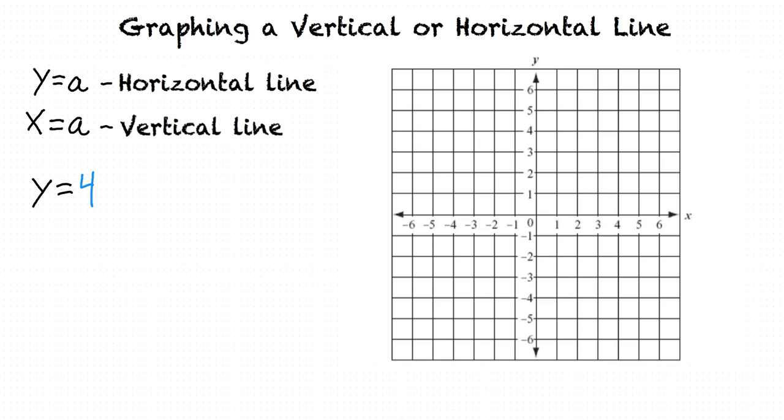Well, x could equal anything as long as y equals 4. So some points on this line would be 0 comma 4, 2 comma 4, and negative 3 comma 4. Right. Those are just 3 points, but we could keep adding points that have a y value of 4. And eventually, we would form a horizontal line passing through the y axis at 4. That's the graph of the line y equals 4.